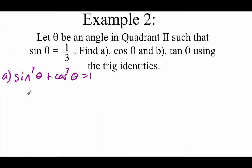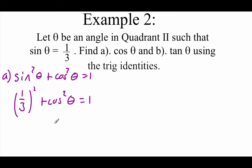We know our sine value is 1/3, so I'm just going to plug that in. We have to square that, and then add on cosine squared of theta, and that equals 1. Squaring a fraction, we square the top and the bottom, so we get 1 over 9 plus cosine squared of theta equals 1.